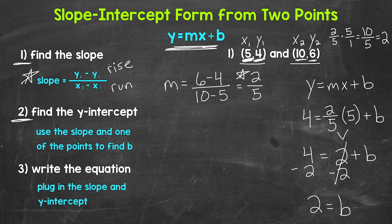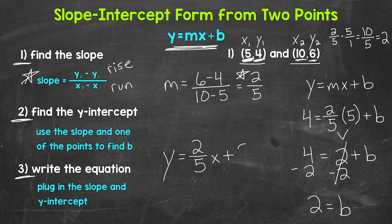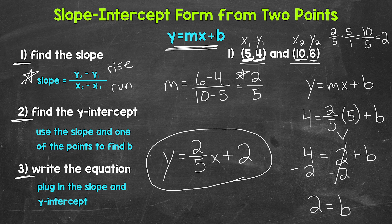Now we have our slope from step 1 and our y-intercept from step 2 — that's everything we need. For step 3, we write our equation by plugging in the slope and y-intercept: y equals 2/5 x plus 2. And that's it — we're done. All this basically boils down to what I like to call 'slope and solve': find the slope, then solve for the y-intercept, and we're good to write our equation. Let's move on to number 2.